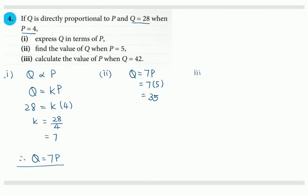Part 3. Q is still 7P. We are given Q is 42 and we are asked to find P. So 42 is 7P, and P will be 42 divided by 7, and that gives us 6.